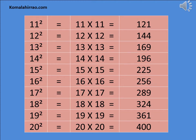18 square is equal to 18 multiplied by 18 is equal to 324.